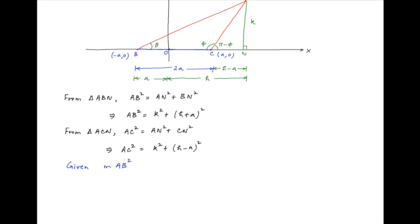We are given that m times AB² plus n times AC² is equal to c². Substituting the values AB² and AC², we get m times [k² + (h + a)²] plus n times [k² + (h - a)²] is equal to c².